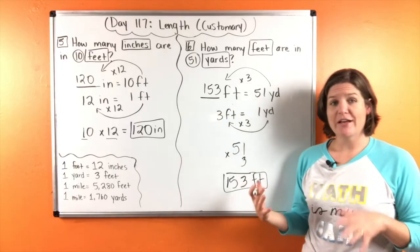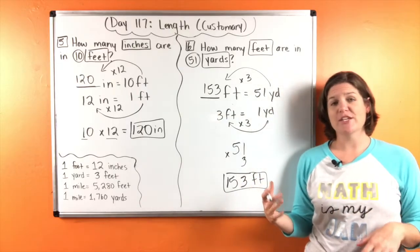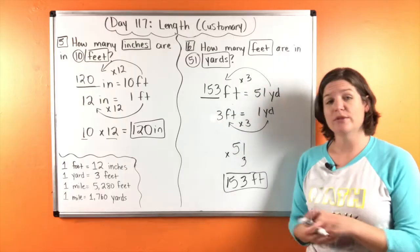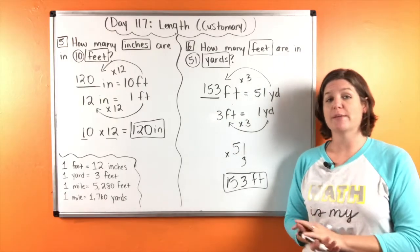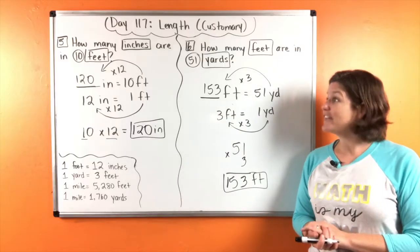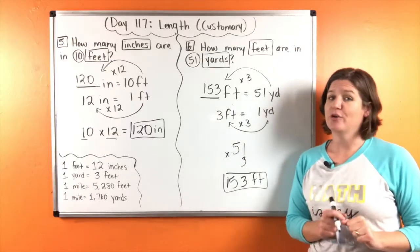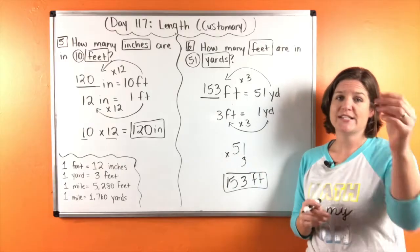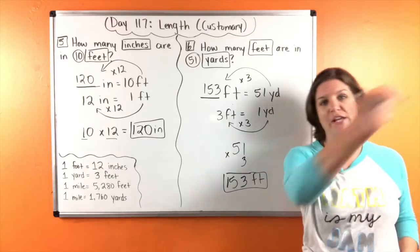So go ahead and make sure you have all of that on your paper. Make any adjustments that you need to, jot down any notes that you need to in your notes for growth. So you don't make the same mistakes next time if you did make mistakes. And then try then last two, number seven and number eight on your own. Come back when you're ready to see if you nailed it.